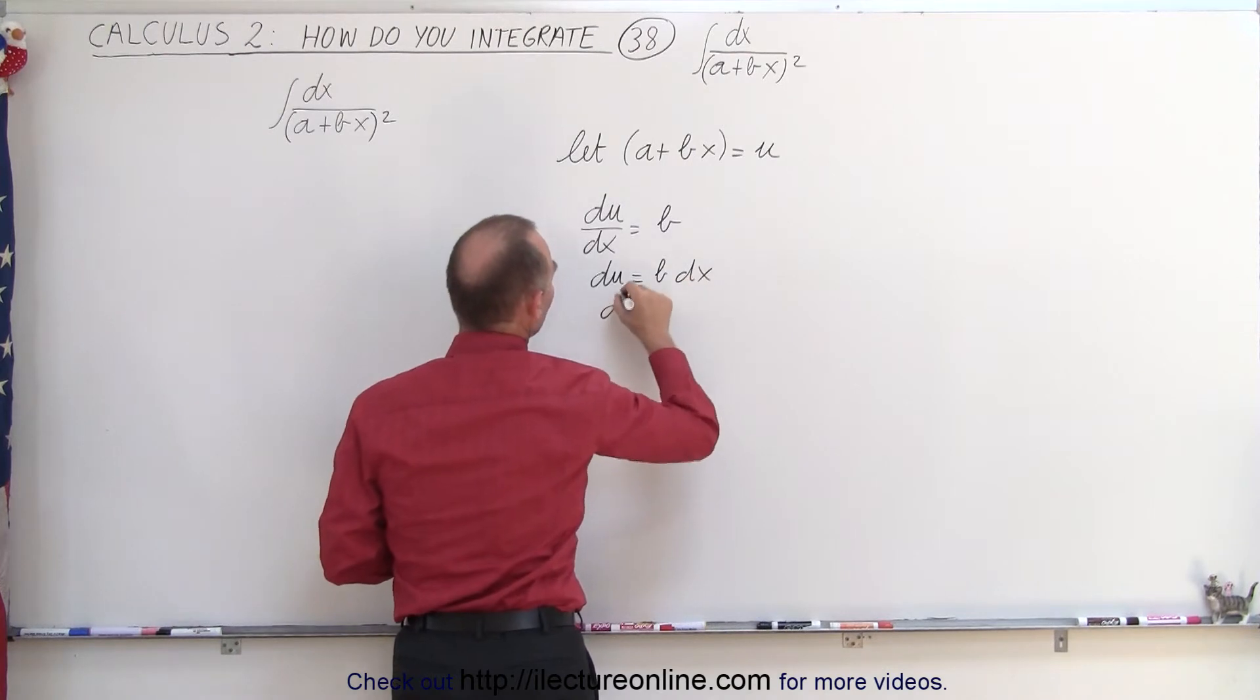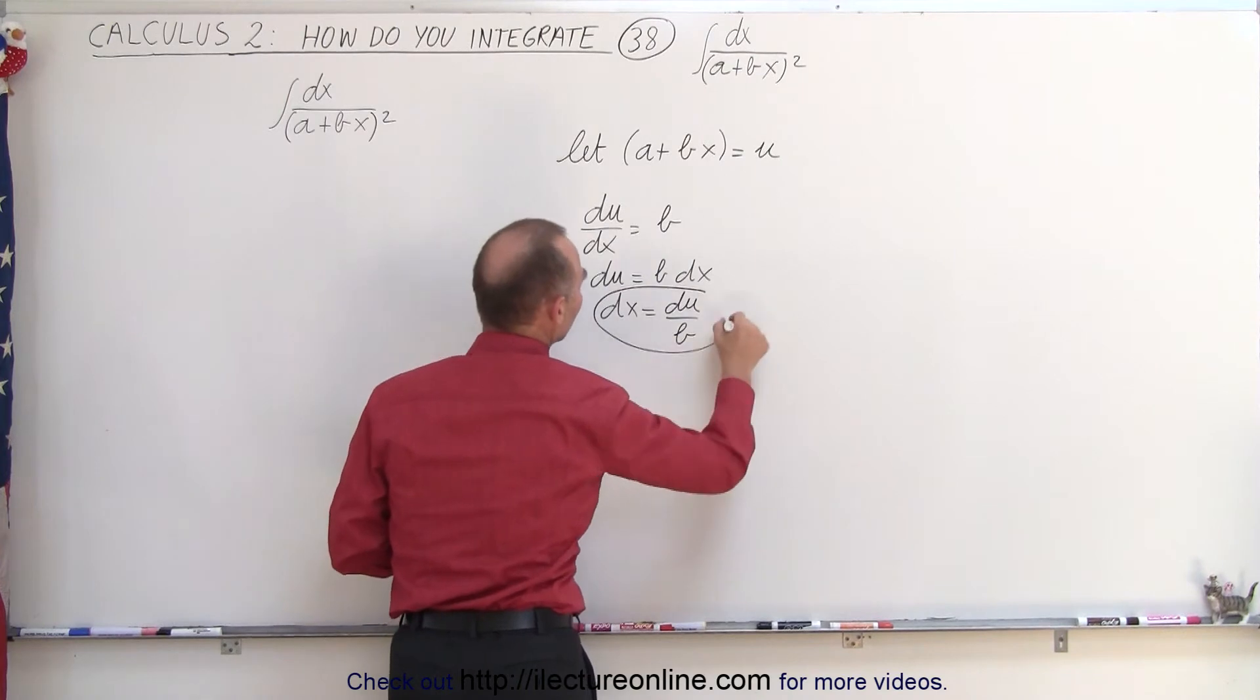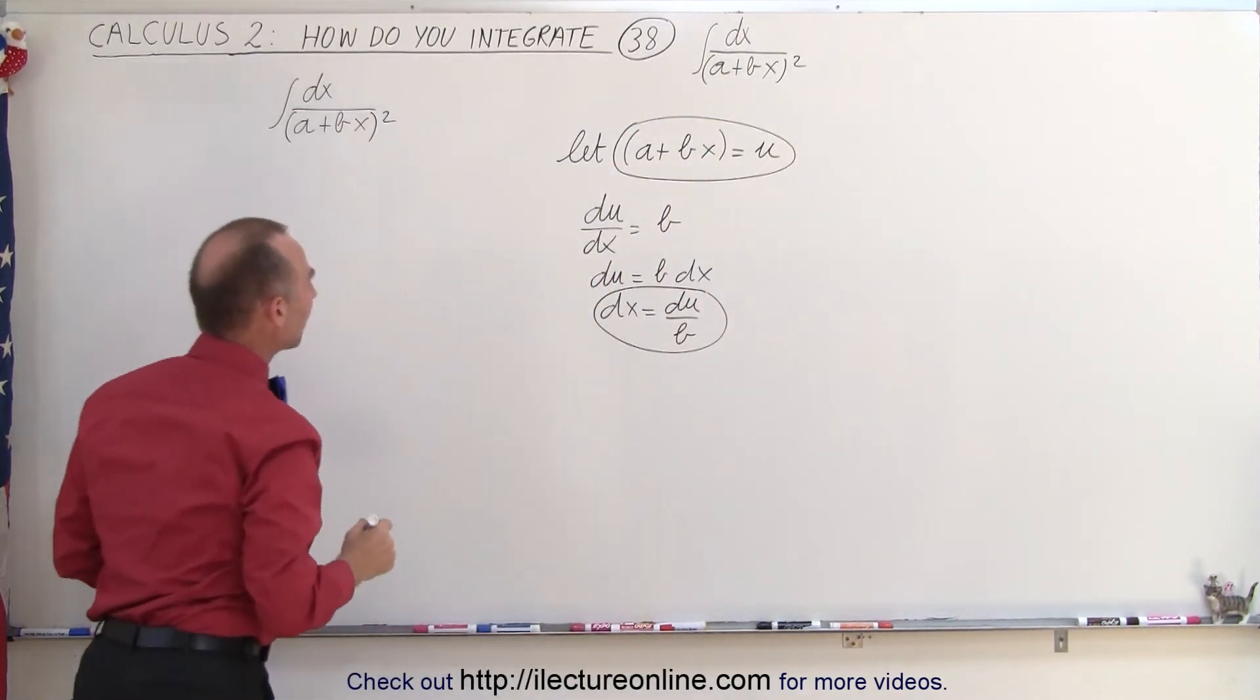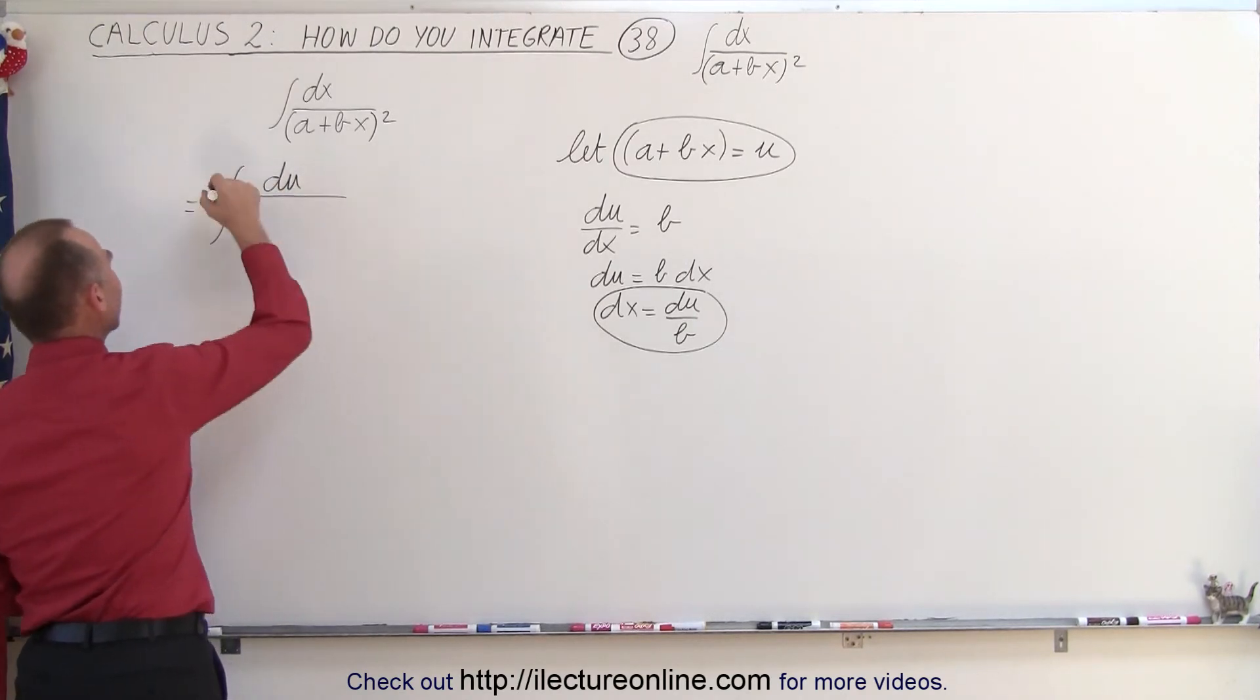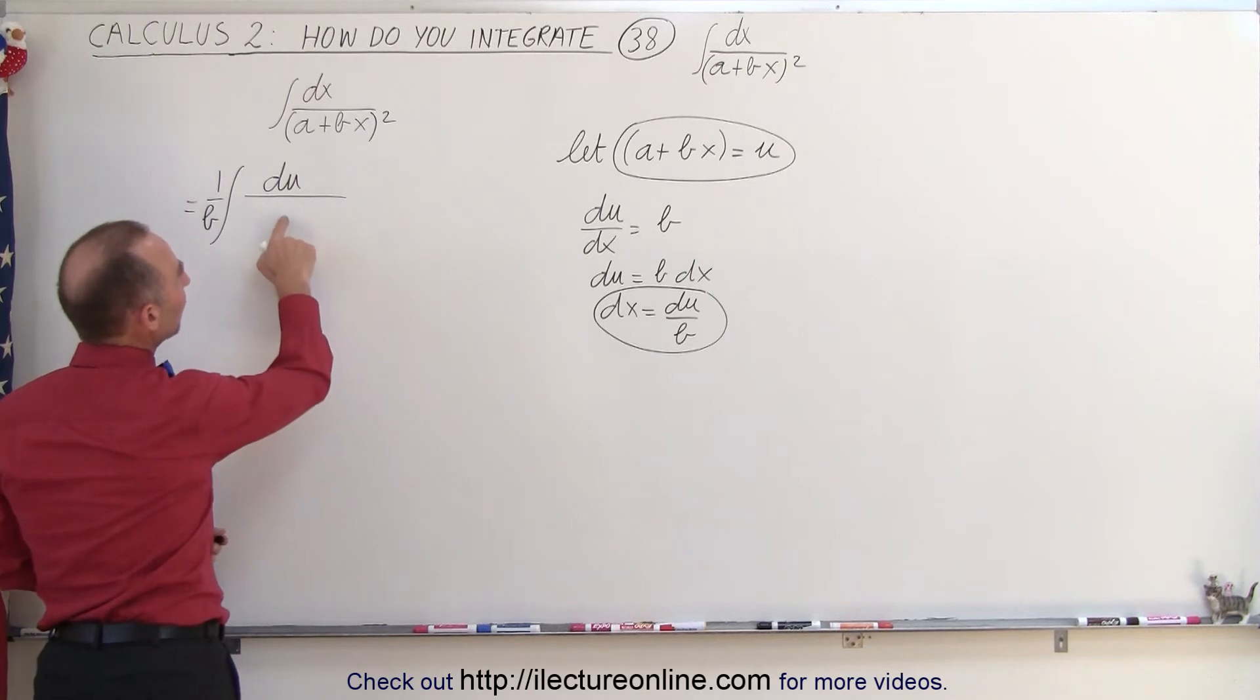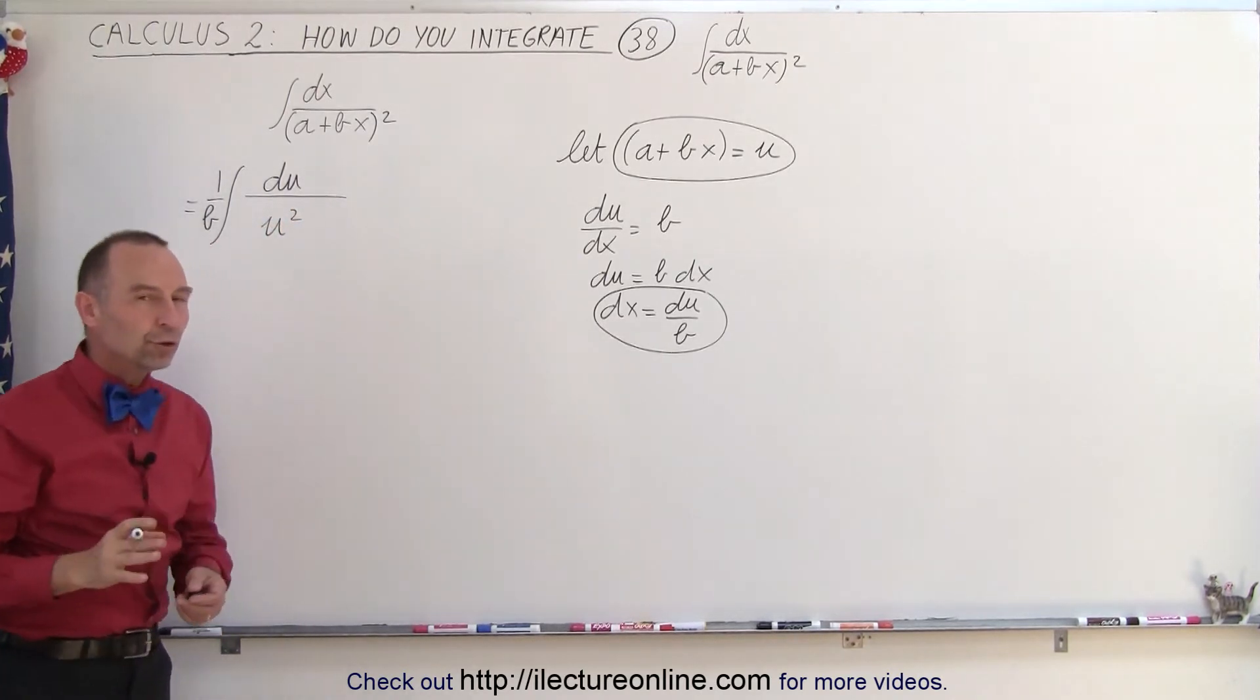So we can substitute this and this in the integral. Let's see what we end up with now. This is equal to the integral of, instead of dx, we write du divided by b, but let's take that to the outside, outside the integral sign, and then in the denominator we have a u squared. So we have du over u squared.